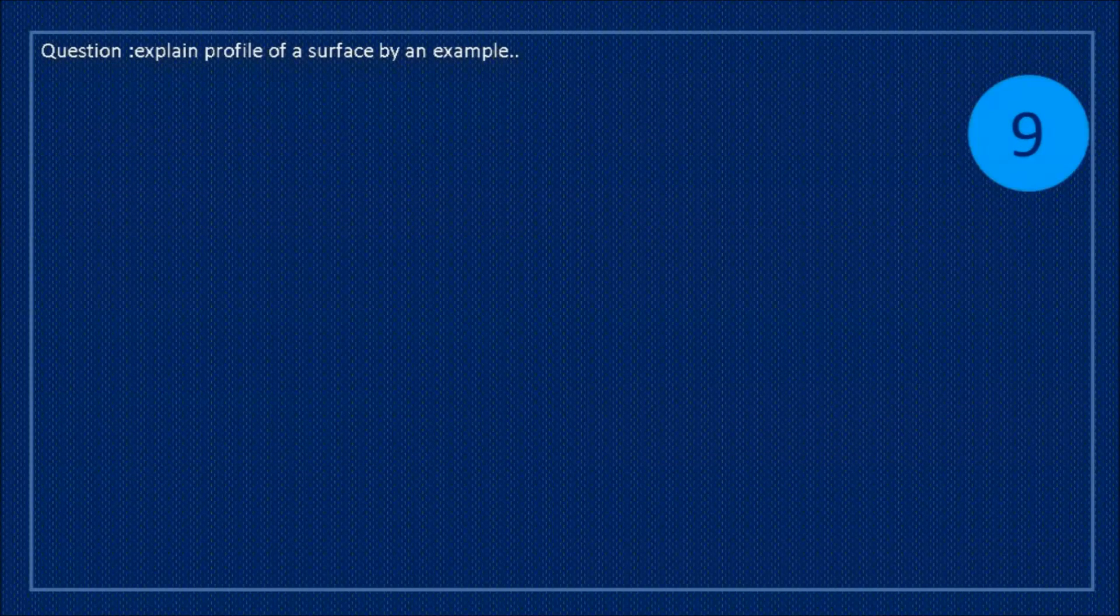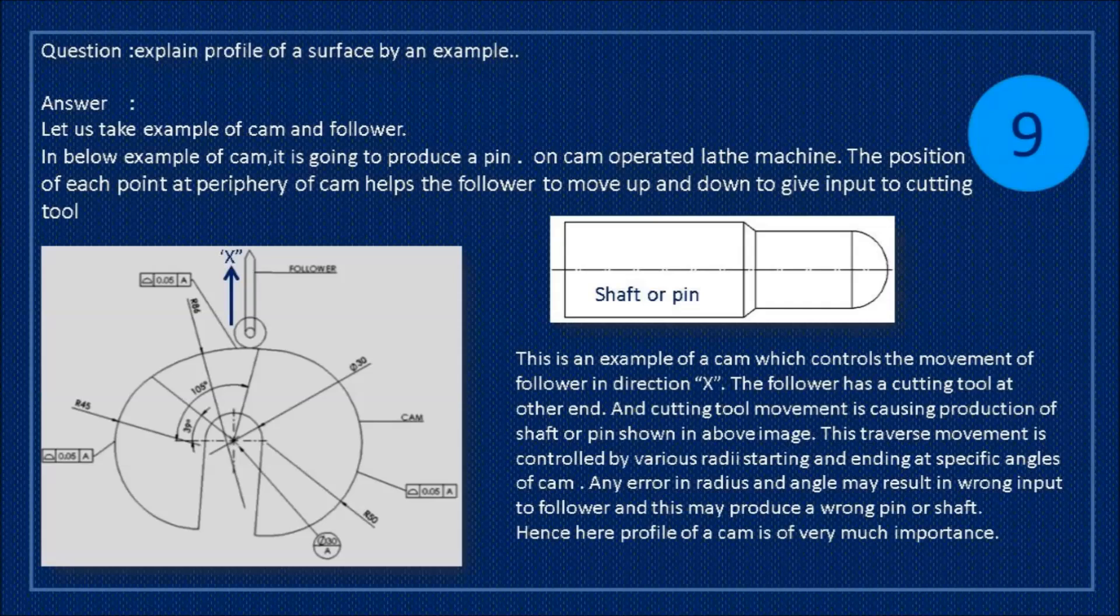Question: explain profile of a surface by an example. Answer: let us take example of cam and follower. In below example of cam it is going to produce a pin on cam operated lathe machine. The position of each point at periphery of cam helps the follower to move up and down to give input to cutting tool.